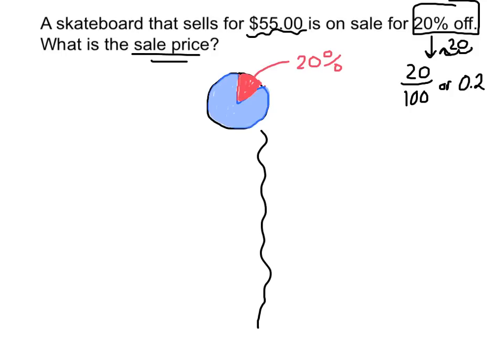So I have a few ways to solve this problem. So I want to know what 20% of $55 is because that's how much money I'm going to save. And if I subtract that amount from $55, I would know the sale price. So if I want to find out what 20% of $55 is, I'm going to multiply because of means times. Only I'm not going to multiply 20 times 55 because 20% is not 20.